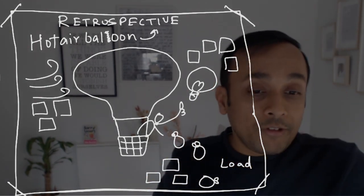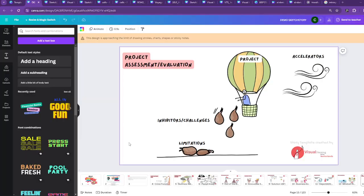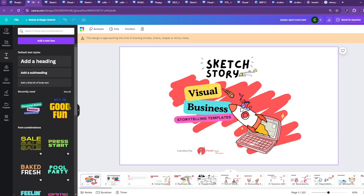Let me show you. This is how you can show the hot air balloon retrospective. This can be a project evaluation as well. This is part of our sketch story, which is a template with storytelling templates of more than 120 business use cases.